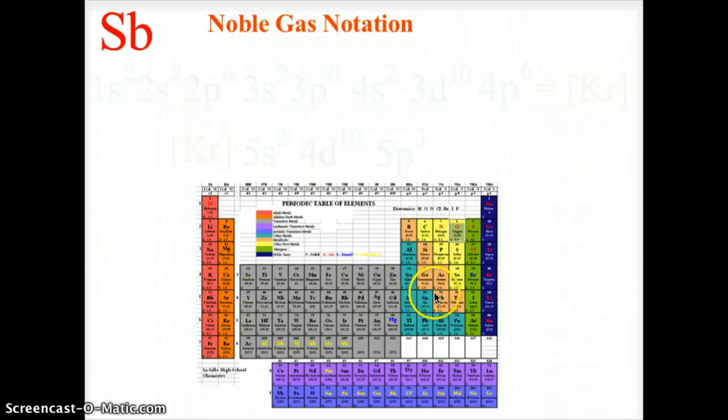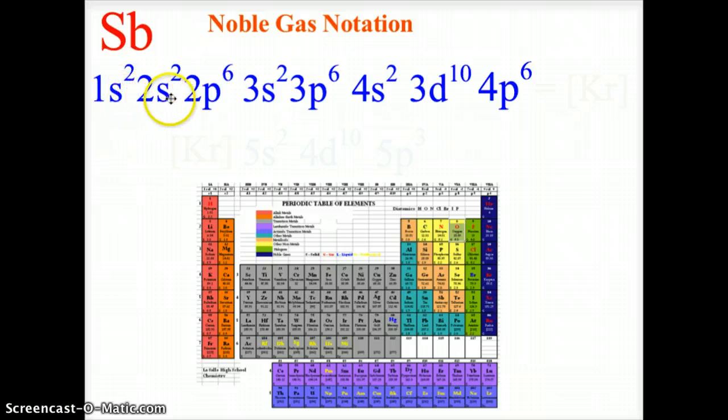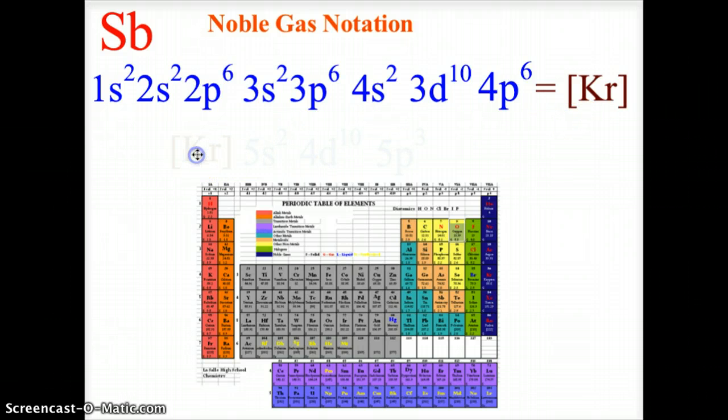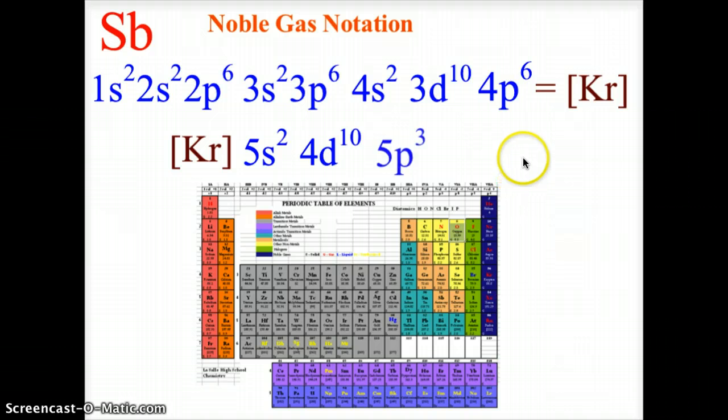Here we have antimony, located in the fifth energy level, the p3 column. We use the noble gas krypton, represented as 1s2 2s2 2p6 3s2 3p6 4s2 3d10 4p6. So antimony has a noble gas notation of Kr in brackets 5s2 4d10 5p3.